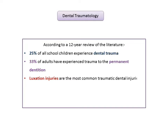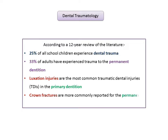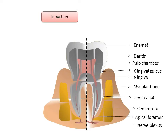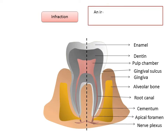Luxation injuries are the most common traumatic dental injuries (TDIs) in the primary dentition, whereas crown fractures are more commonly reported for the permanent dentition. Infraction is an incomplete fracture or crack of the enamel without loss of tooth structure.